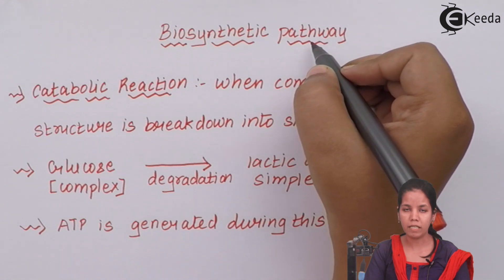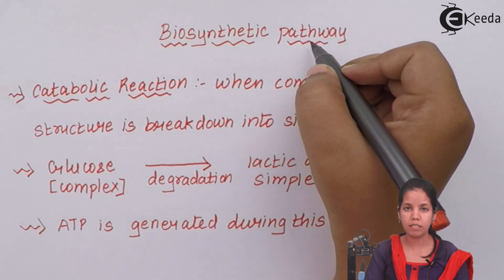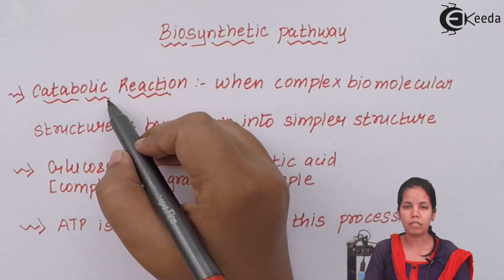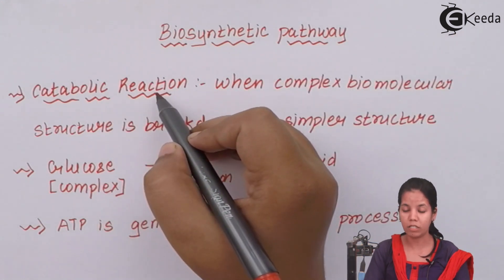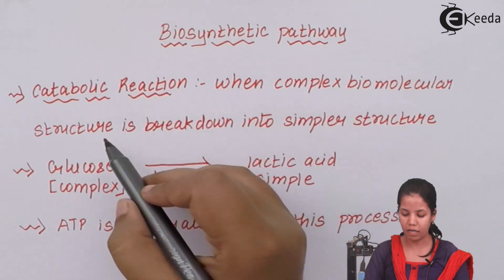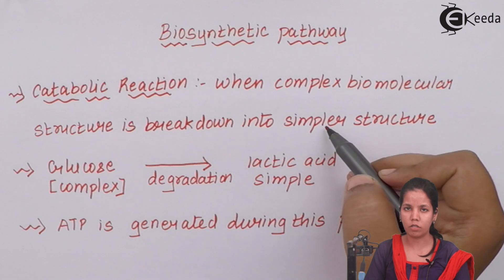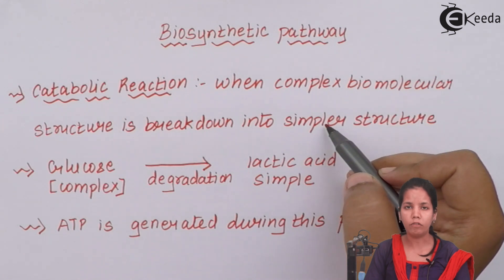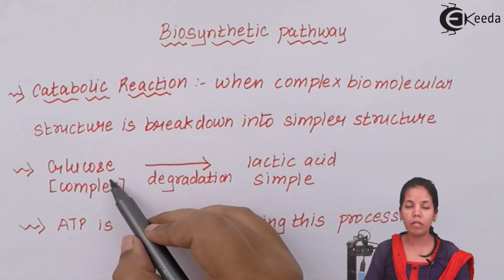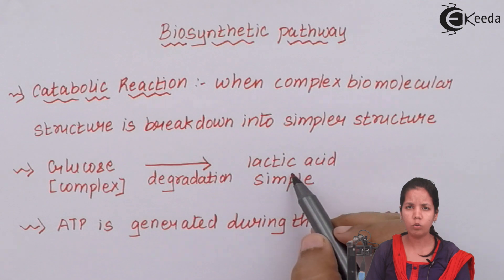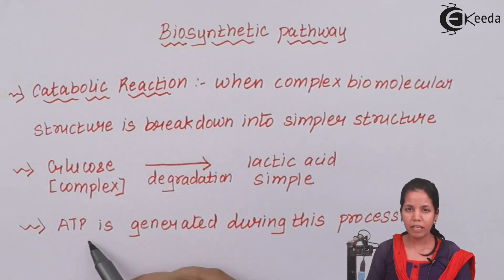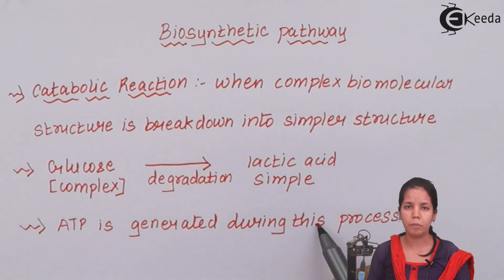Biosynthetic pathways are pathways during which energy is synthesized. An example of this is catabolic reactions. Catabolic reactions are basically when complex biomolecular structures break down into simpler structures — large molecules are broken down into smaller molecules. An example is glucose, which is formed during digestion and broken down when required into lactic acid, used as an energy source. A lot of ATP is generated during catabolic reactions, which are also called subtraction reactions.